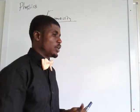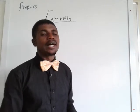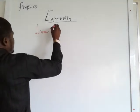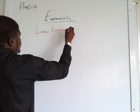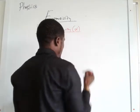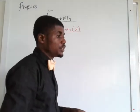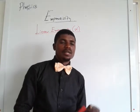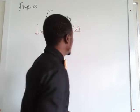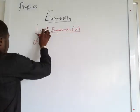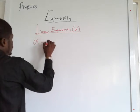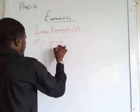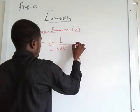The increase in size of an object in one dimension is what we call linear expansivity. Linear expansivity alpha of a body or an object due to the addition of heat energy is defined as the increase in length per unit length per each degree rise in temperature. Mathematically, alpha equals (L2 minus L1) divided by (L1 times change in temperature). We call this equation number 2.